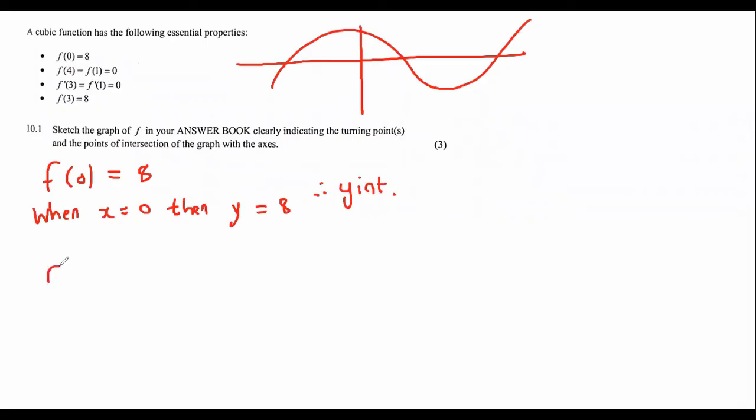Next one. When f(4) is equal to f(1) equals to 0. Some students don't like it when they write it like this. So what you can do if you want, you can think of this like this instead. You can think of it like that rather. So what are they saying here? When x is 4,